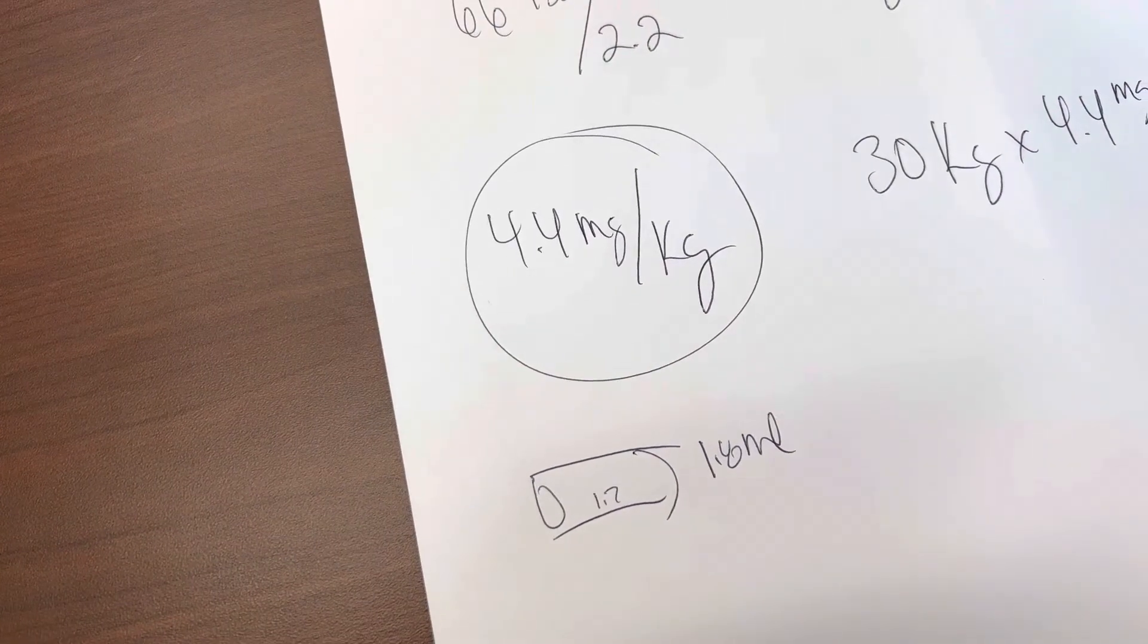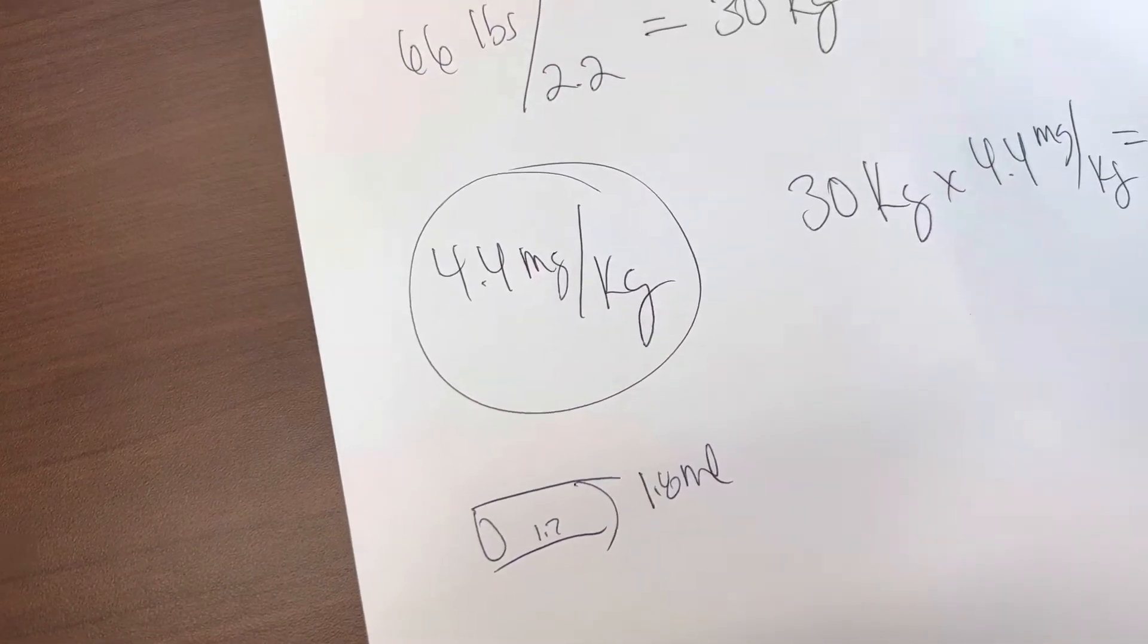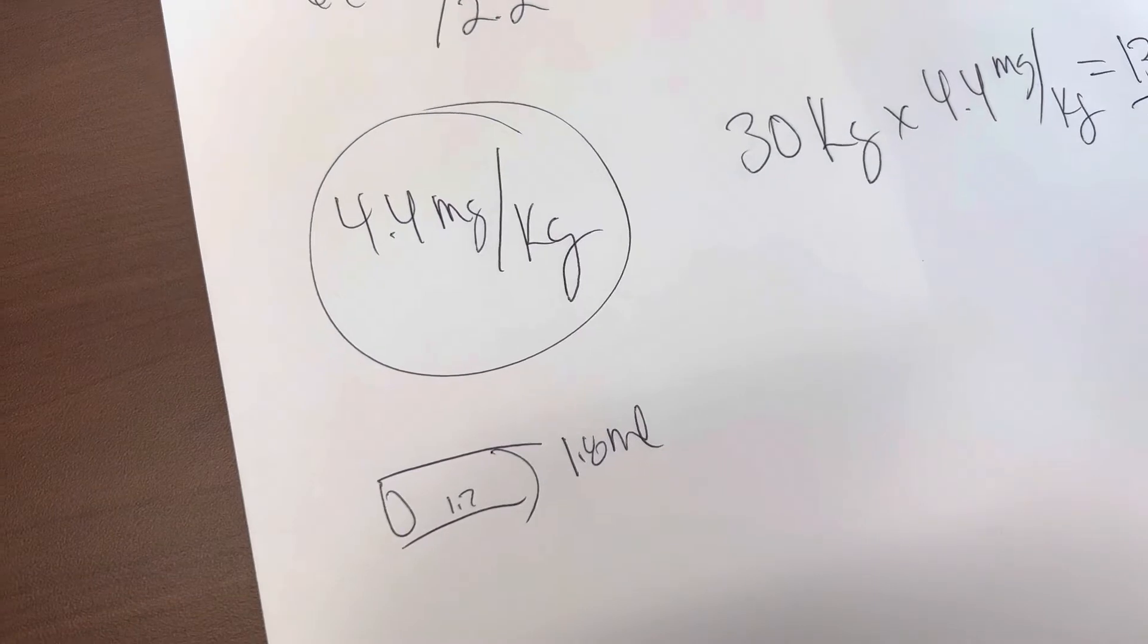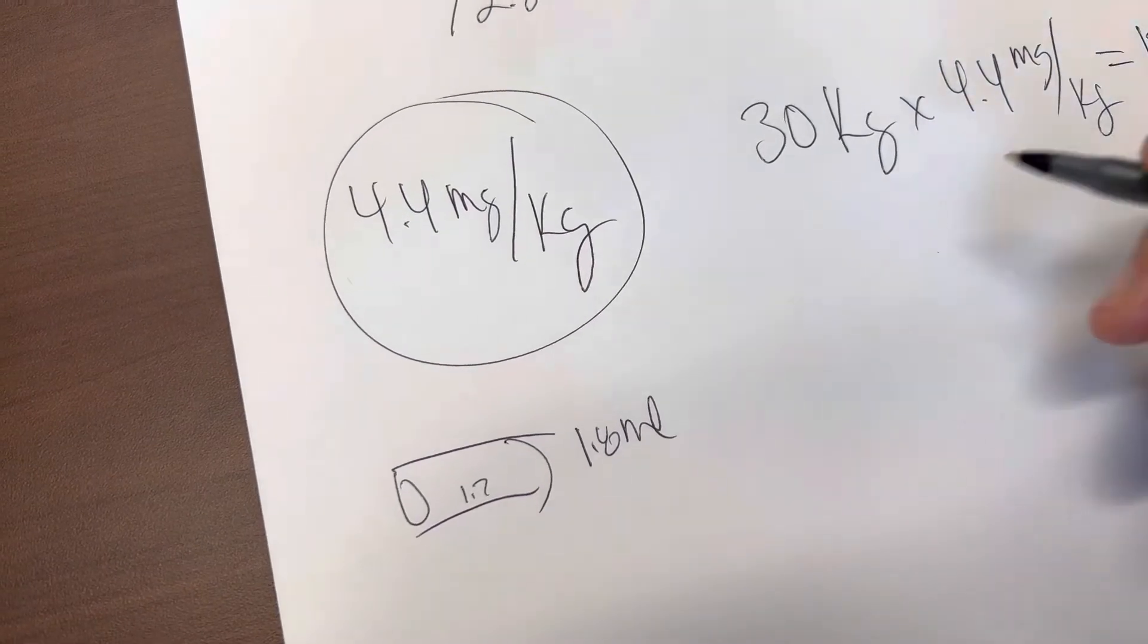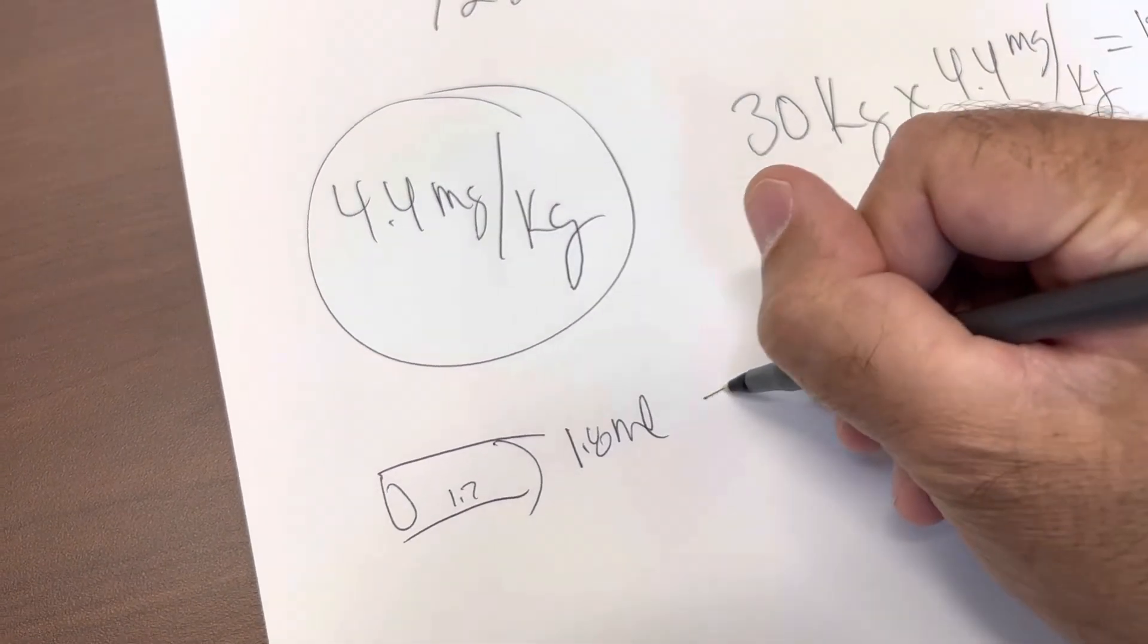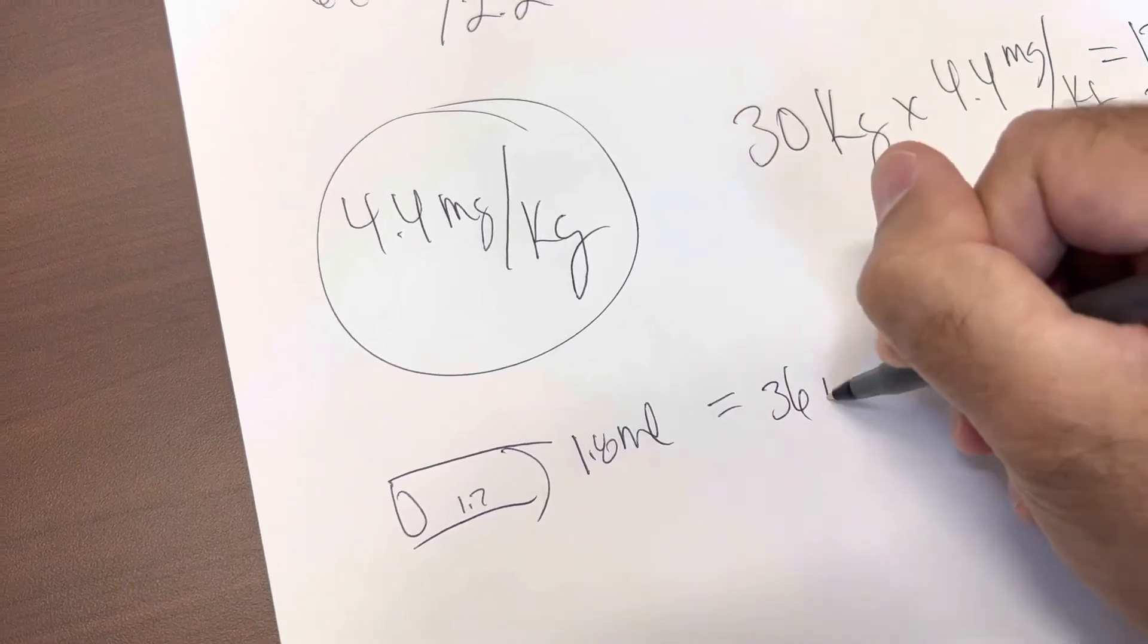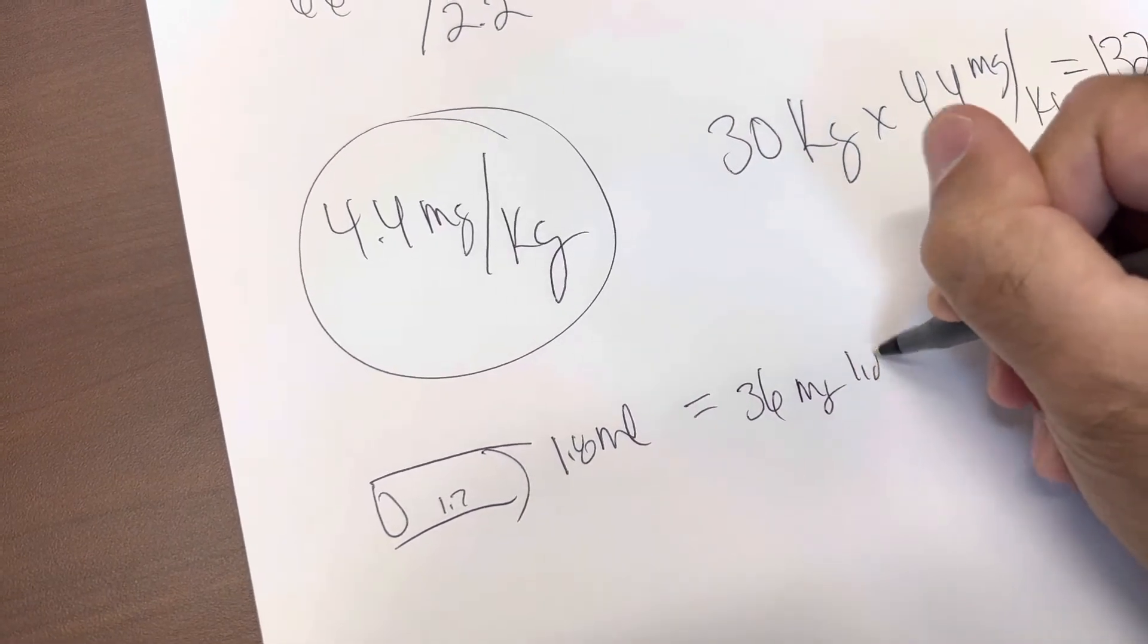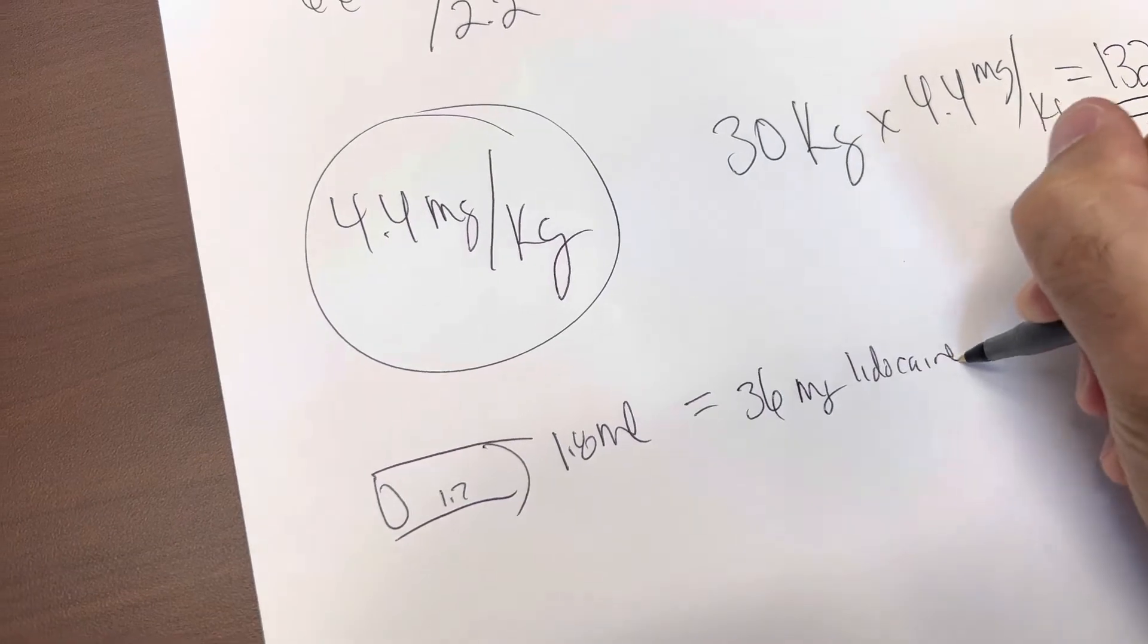So if it's 1.8 milliliters of volume, then we know that in that particular carpule, we have 36 milligrams of lidocaine in that carpule.